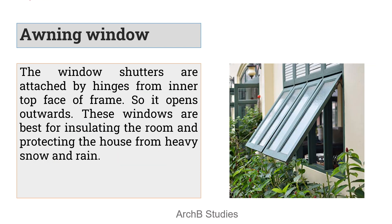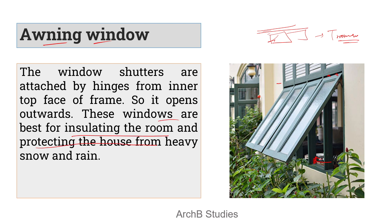Next is the awning window. Awning windows open outwards and have hinges at the top. If such an opening is near the roof it becomes a transom window, but if it is in the middle of the wall it cannot be called a transom window or ventilator — these are the awning windows. These windows are best for insulating the room and protecting the house from heavy snow or rain.